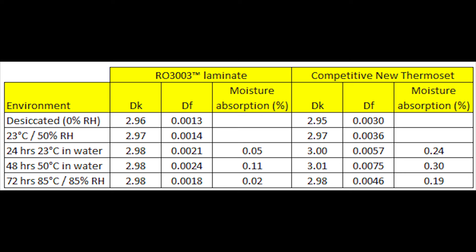These are pretty dramatic changes. And looking at the more realistic 72-hour 85-85 test, the PPE baseline of 0.0036 dissipation factor goes up an additional 0.001 to 0.0046 — that's pretty significant. Looking at the moisture absorption numbers themselves, the RO3003, depending on conditions, is usually 0.01 percent or less. For the PPE materials, they are about three to five times higher for moisture absorption.